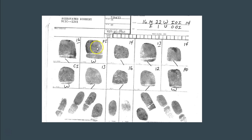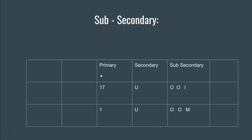Here's another example of a secondary. In this case, we have a whorl — it doesn't matter if it's a plain whorl — we just write capital W, indicating it's a whorl in the number two finger. And then we have an ulnar loop, so we write an uppercase U in the secondary spot on the denominator. So the secondary is really easy to do.